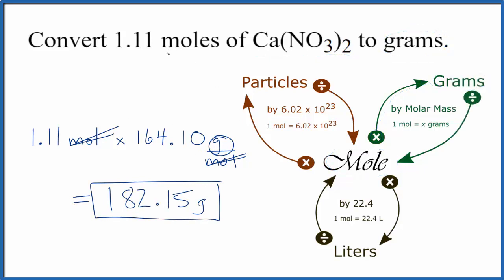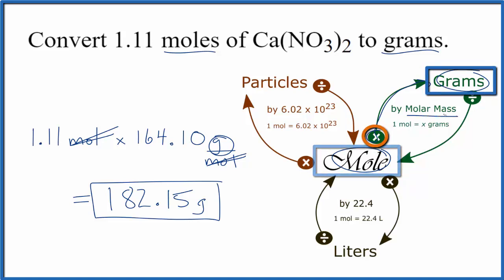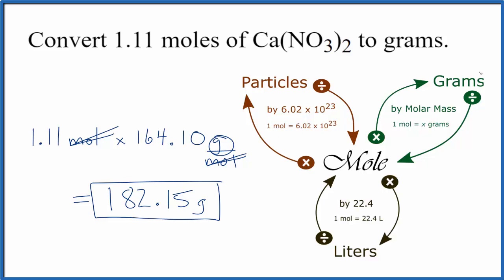To recap, when going from moles to grams, we multiply by the molar mass. If we were given grams of calcium nitrate and asked to find moles, we do the reverse. We'd start with grams, divide by the molar mass, and that would convert from grams to moles.